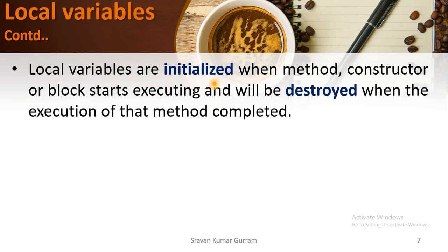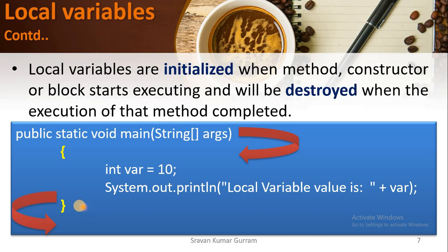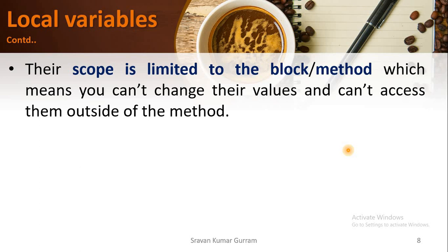Local variables are initialized when a method, constructor, or block starts executing, and will be destroyed when the execution of that particular block is completed. Whenever the main method is being executed, the variable will be initialized. And whenever the execution of main is completed — whenever control comes out of the main method — this variable will be destroyed from memory. The scope of local variables is limited to that particular block only.